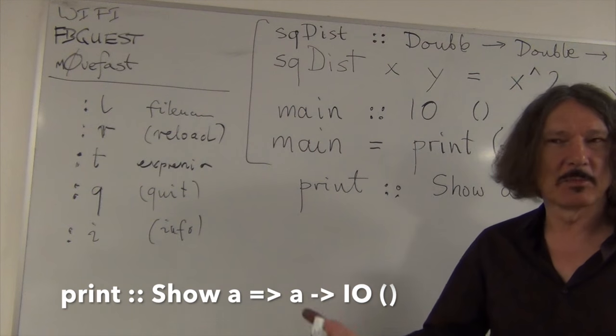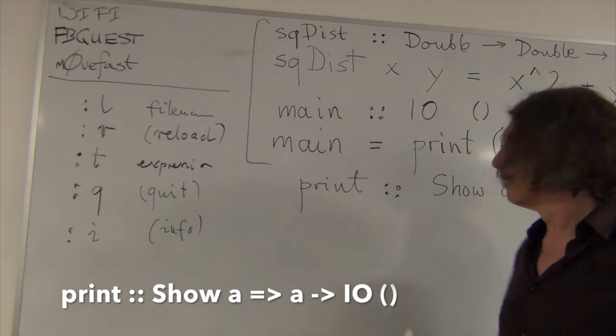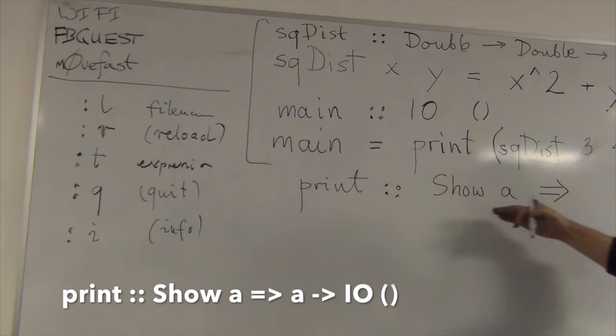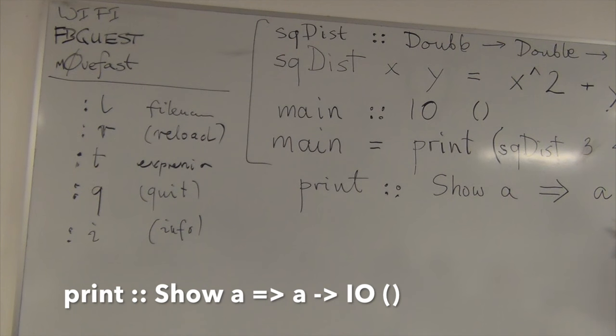it only can take arguments of a special class that's called show. Show A. So A has to be of class show, which we would probably call in Java showable, right? Something that can be shown, which means it can be converted to a string. Okay? That's the simplest explanation. So A has to be of type show, double arrow, right? There's like a precondition that defines A as a subset of all types. And it just takes A, this showable A, and produces, it's a function, it produces a result of type IO unit.